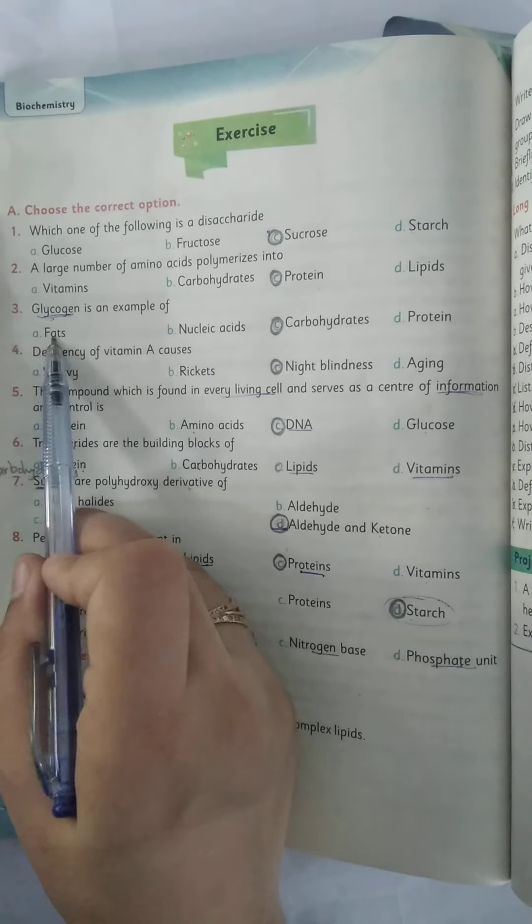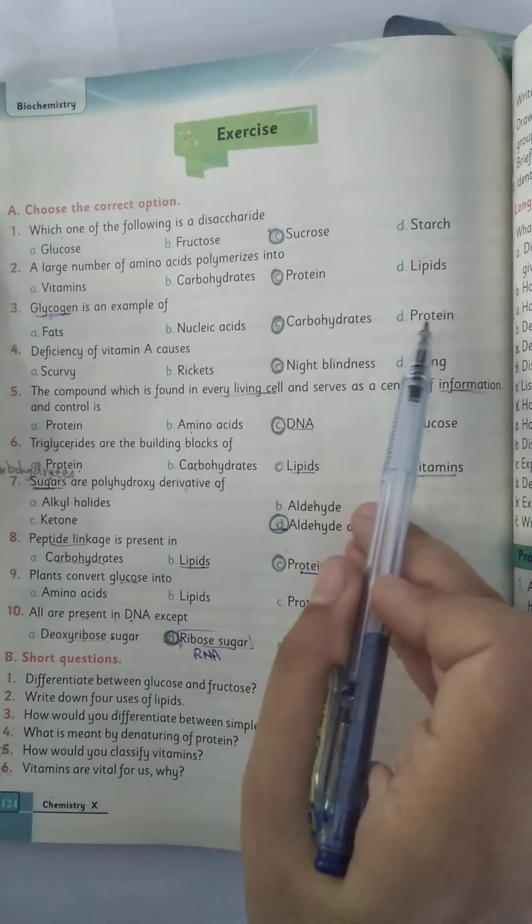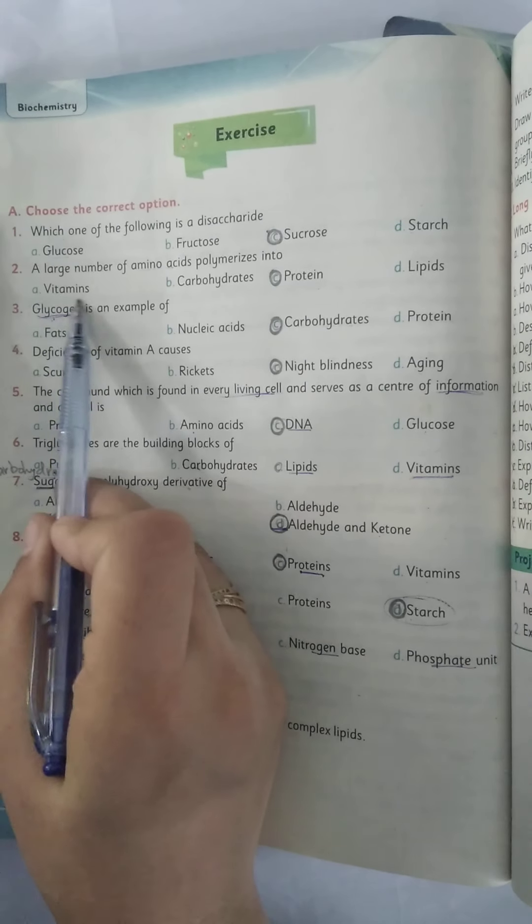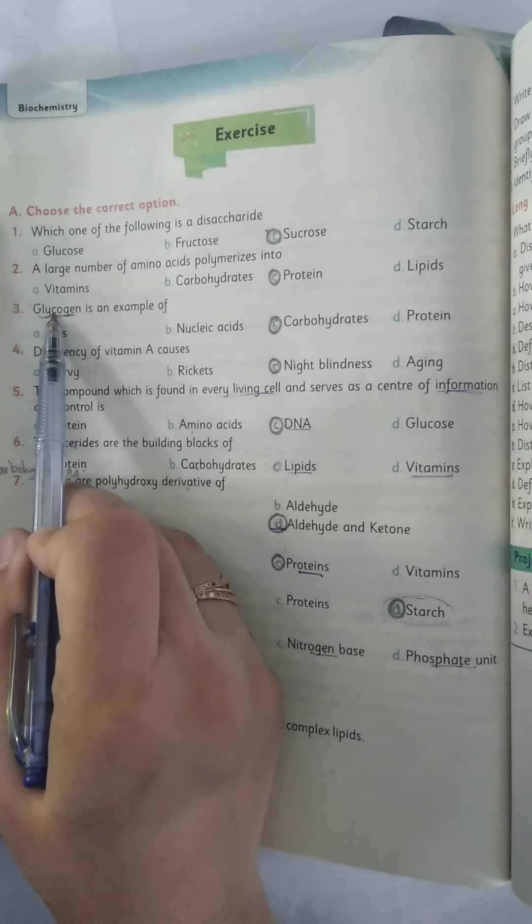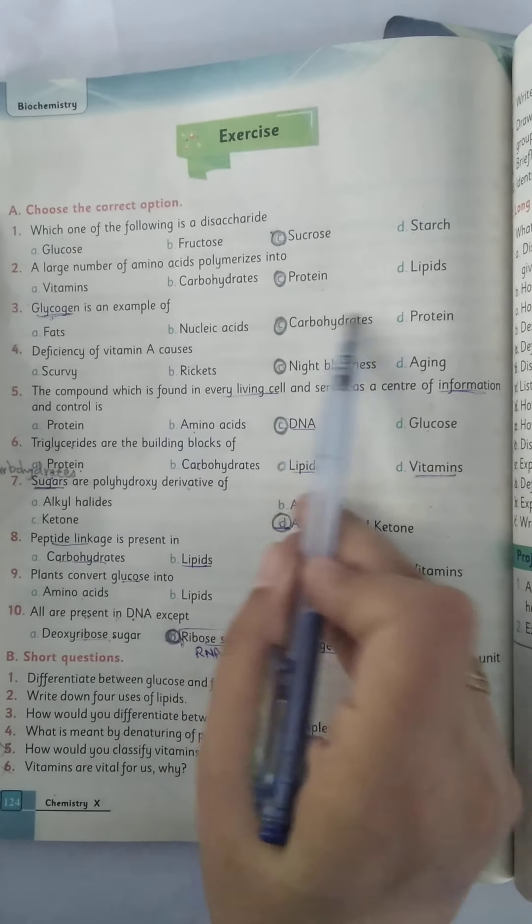Glycogen is an example of fats, nucleic acids, carbohydrates, proteins. As you know that glycogen is the storage form of carbohydrates that is present in animals. So the correct option is carbohydrates.